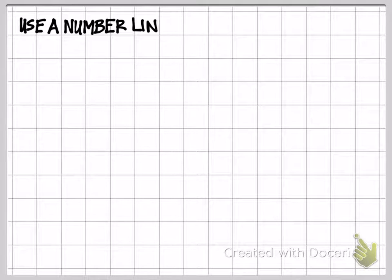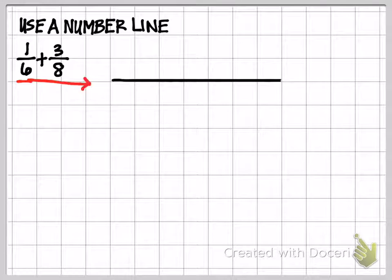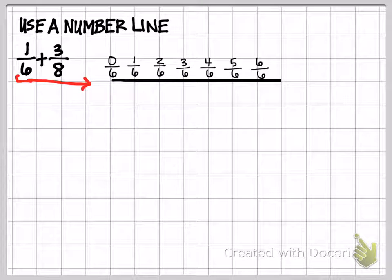The first strategy we're going to talk about is using a number line. The first problem that we're going to work with is 1/6 plus 3/8. The first thing I'm going to do is create a number line using 1/6 as the fraction. So I start with 0/6, 1/6, 2/6, 3/6, 4/6, 5/6, and 6/6.